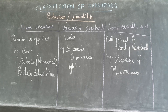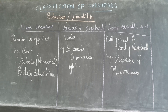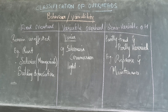Variable overhead means it varies — it keeps on changing. For example, a salesman's commission depends on how much sales he does, so it varies. Factory lightings and office lightings also vary based on consumption. These are examples of variable overhead.